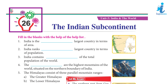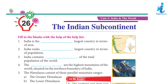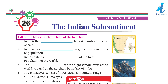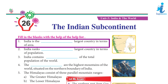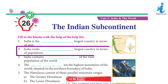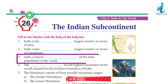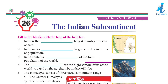Chapter 26: The Indian Subcontinent. Fill in the blanks with the help of the hints. 1. India is the 7th largest country in terms of area. 2. India ranks 2nd largest country in terms of population. 3. India contains one-sixth of the total population of the world.